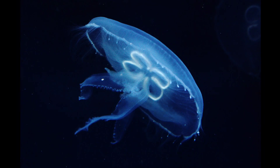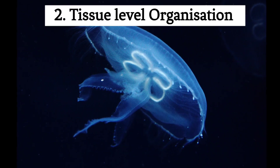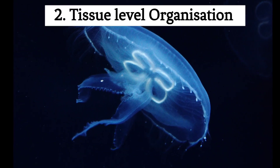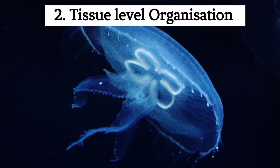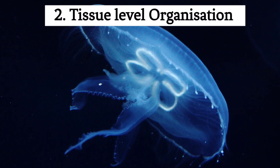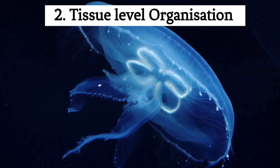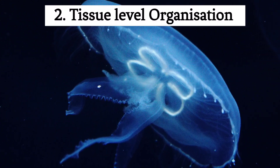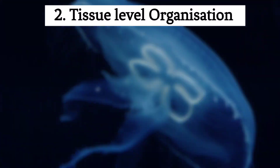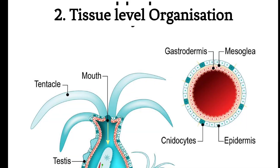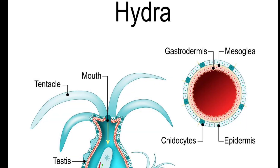2. Tissue Level Organization: Cnidarians are characterized by tissue level organization, which is a step up from the simple cellular organization seen in sponges. They have two primary tissue layers, the epidermis and the gastrodermis.